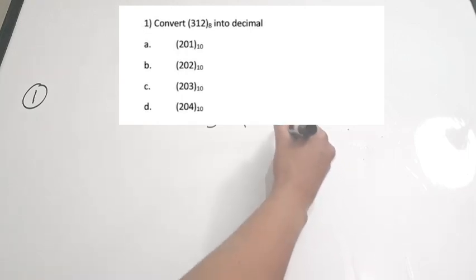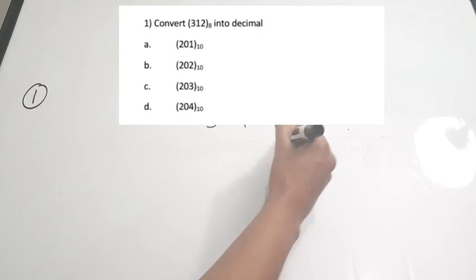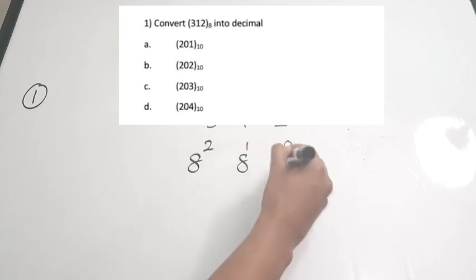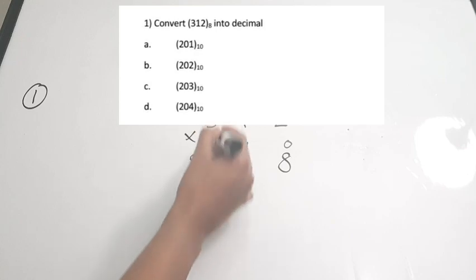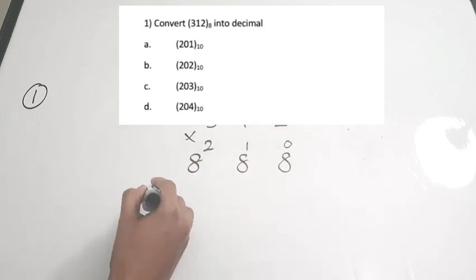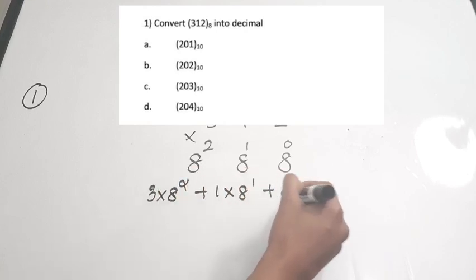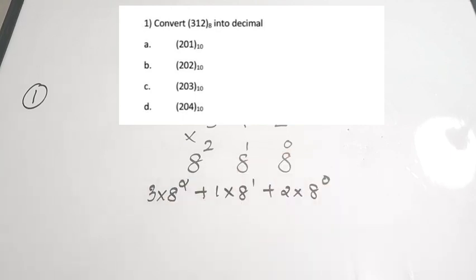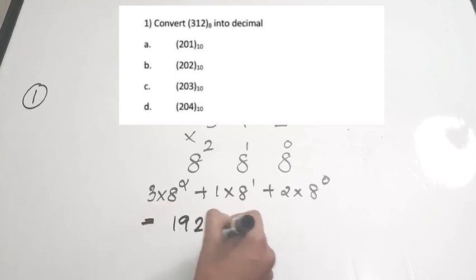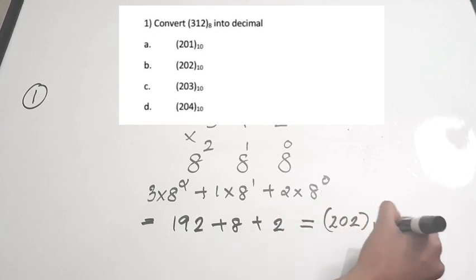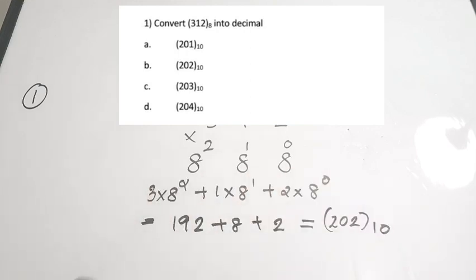First, write the number 3-1-2 base 8, then write the position values: 0, 1, and 2. Now write these as powers of 8 and multiply. You get 3×8² + 1×8¹ + 2×8⁰. Solving: 192 + 8 + 2 = 202 base 10.